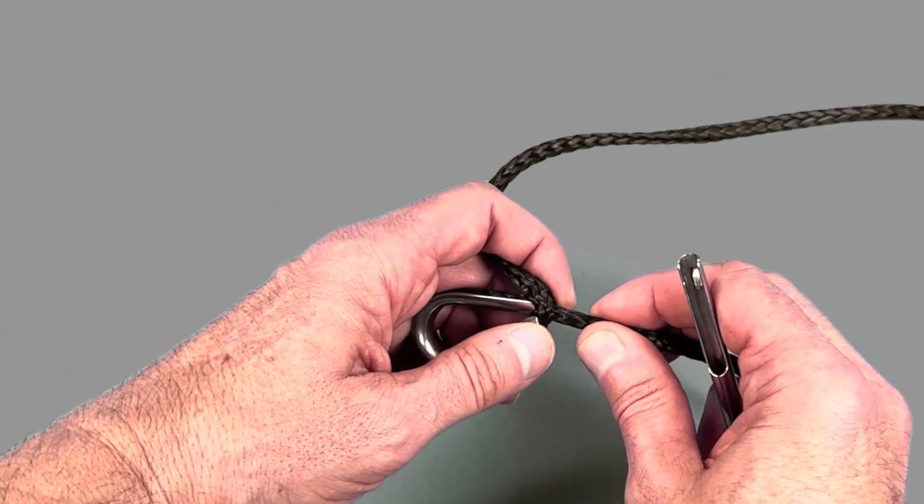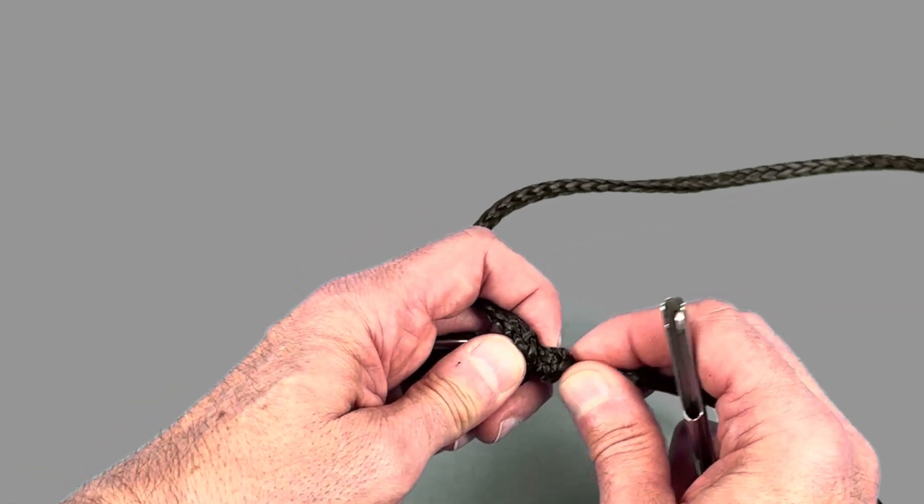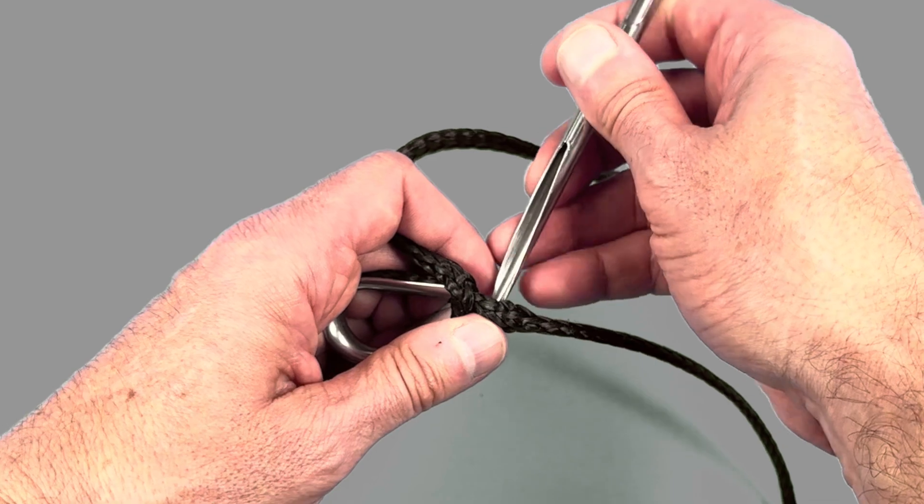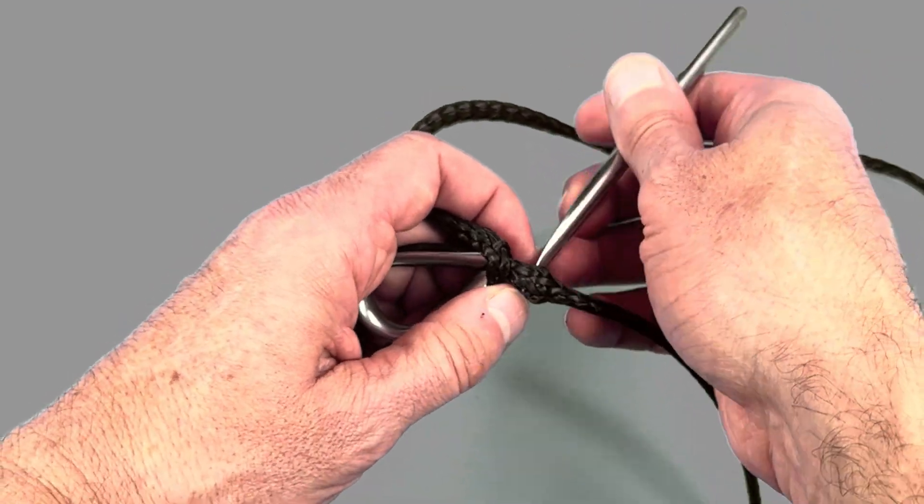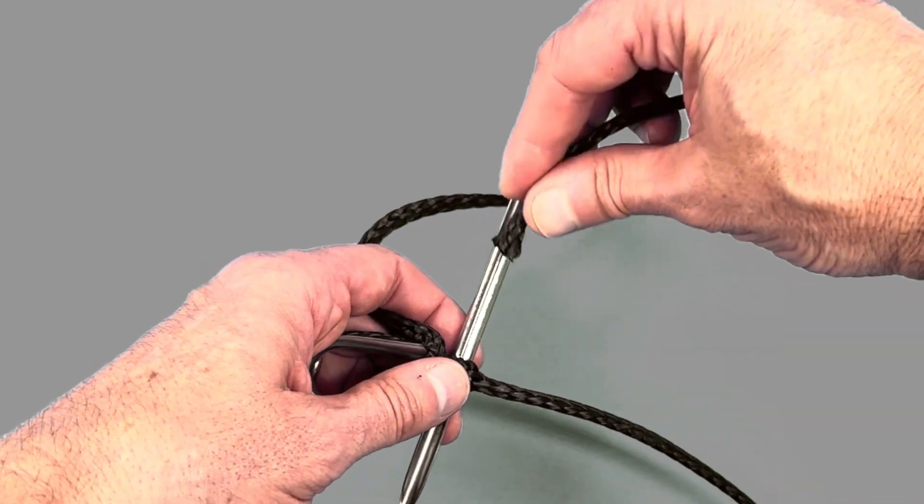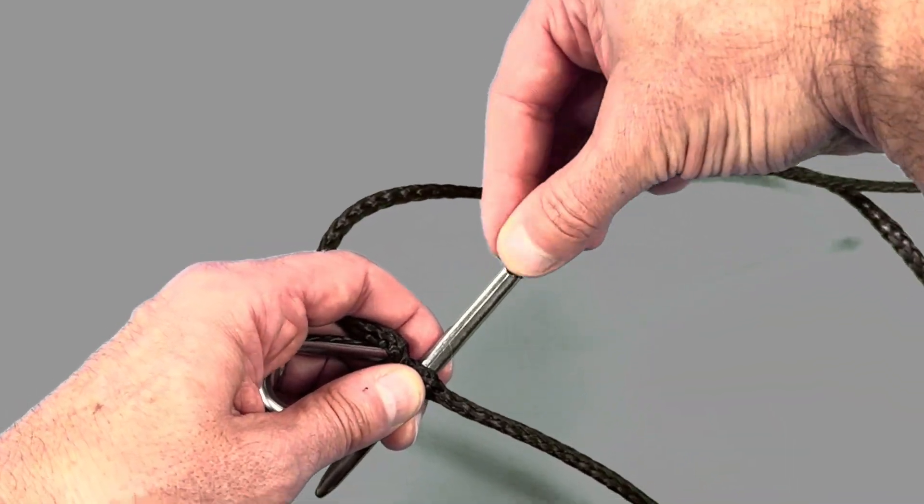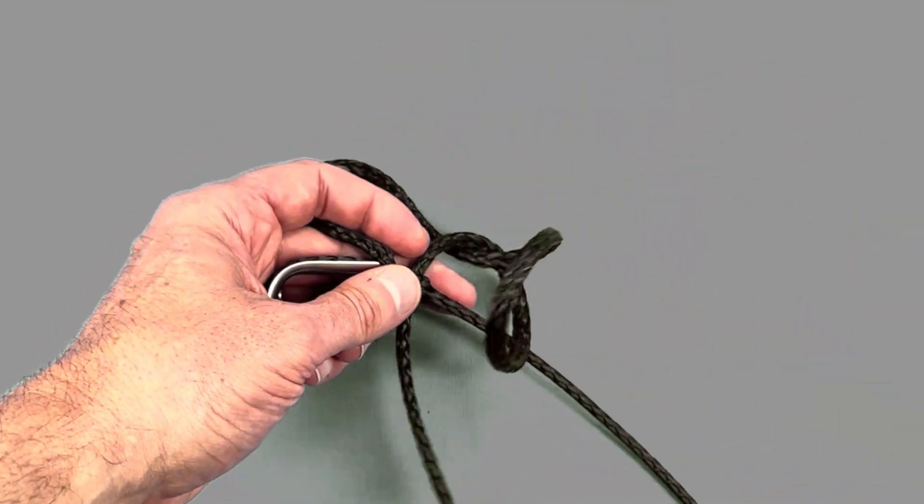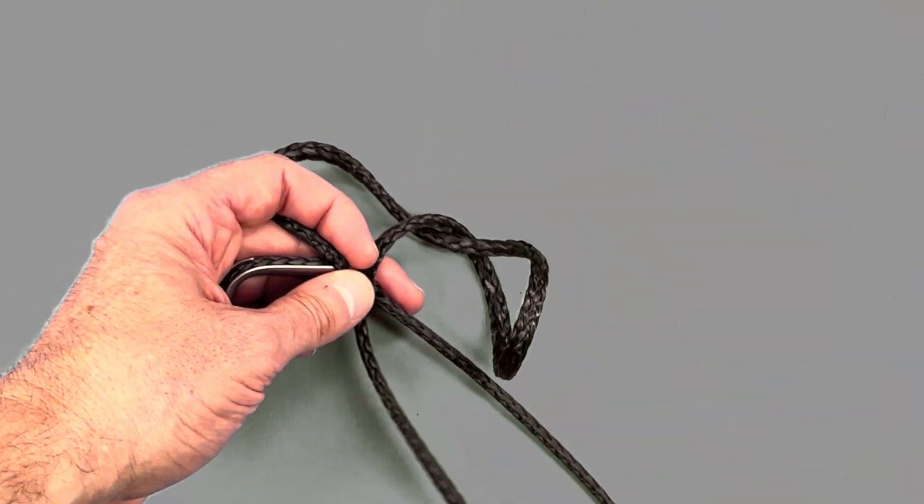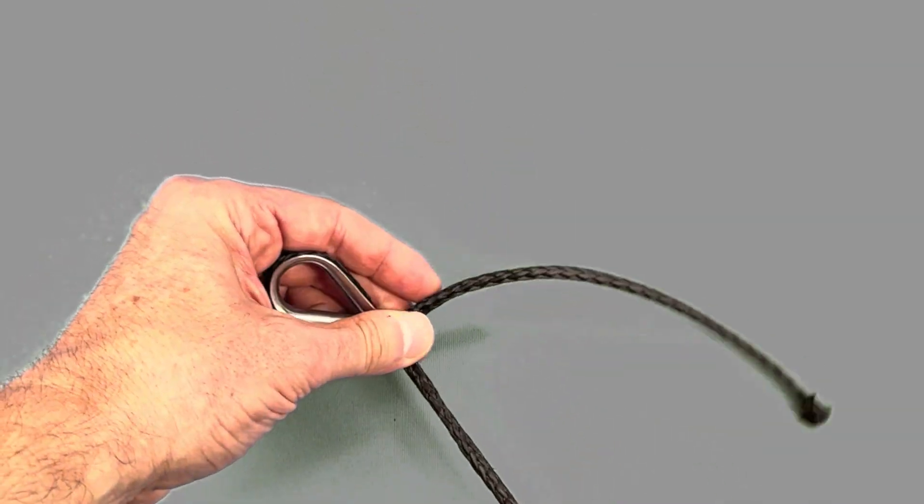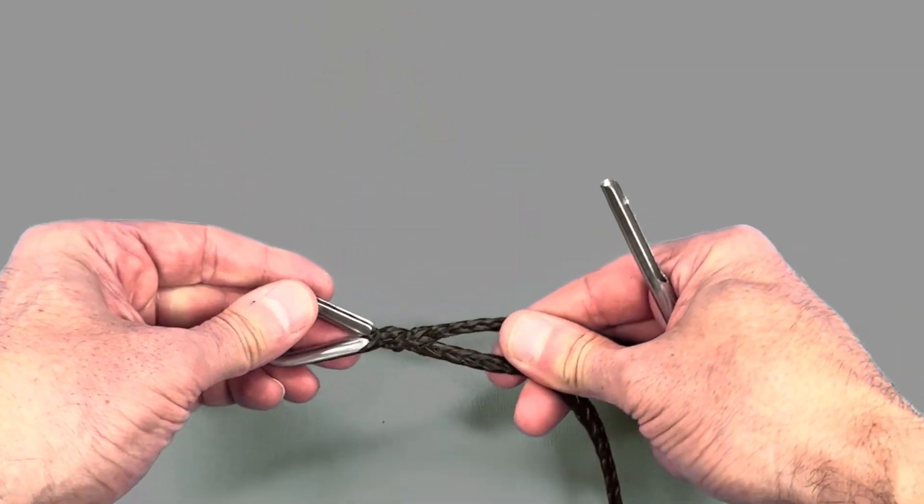As we've only got a short end, you now want to take your fid, once again loosen up the Dyneema, and put it through the middle making sure that there's equal threads on each side. Then take the standing end, put it into your fid, and pull it through to complete the simple Brummel locking splice.